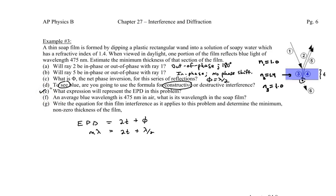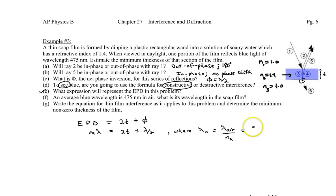Before plugging in values, we calculate the wavelength within the film: λ_film = λ_air / n₂ = 475 nm / 1.4 ≈ 339 nm.